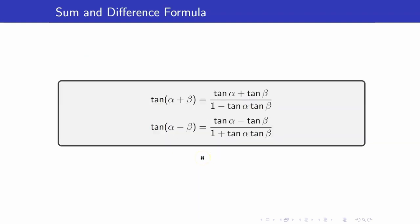Here are the sum and difference formulas for tangent. For tangent(α + β), the numerator is tangent α plus tangent β, and the denominator is 1 minus the product of the two. For tangent(α − β), the numerator is tangent α minus tangent β, and the denominator is 1 plus the product of the two. The signs are always opposite between numerator and denominator.